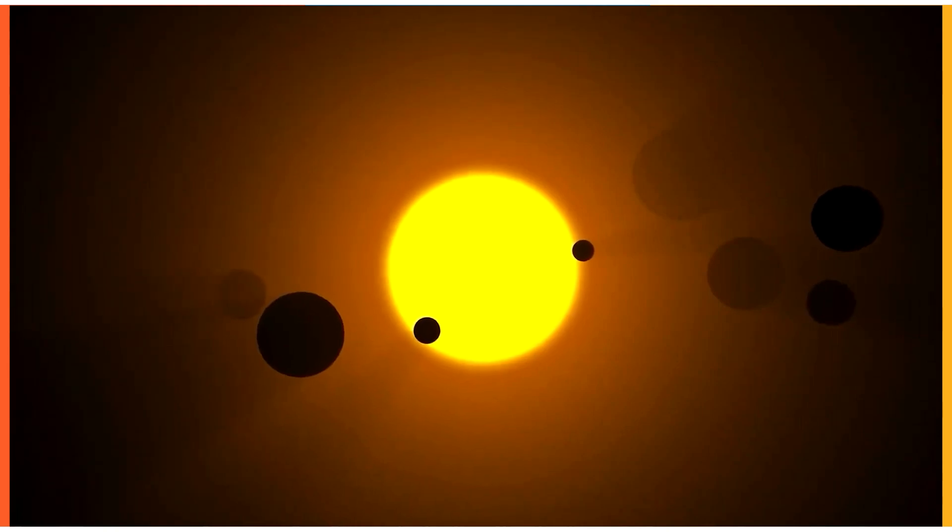Within the habitable zone of their stars, Kepler detected between 2 and 12 planets that are about the same size of Earth.